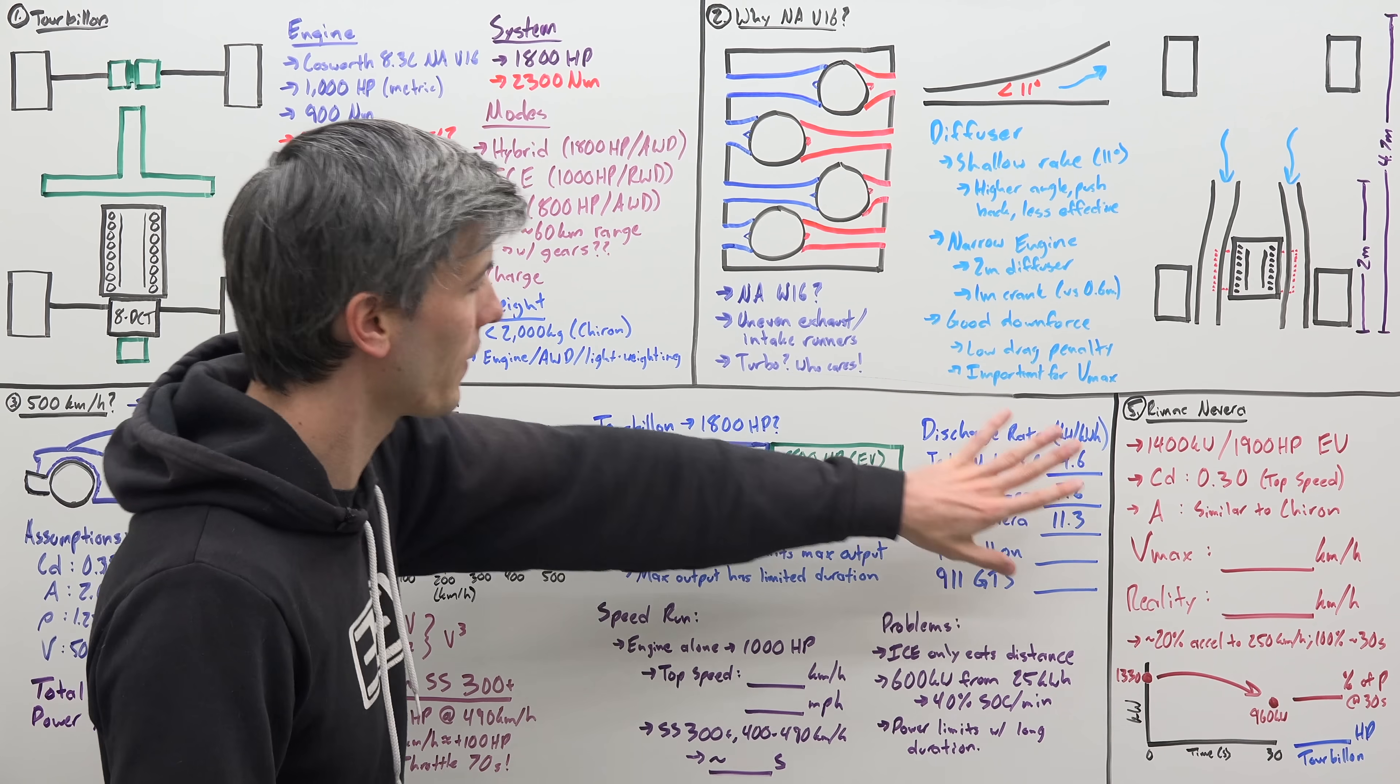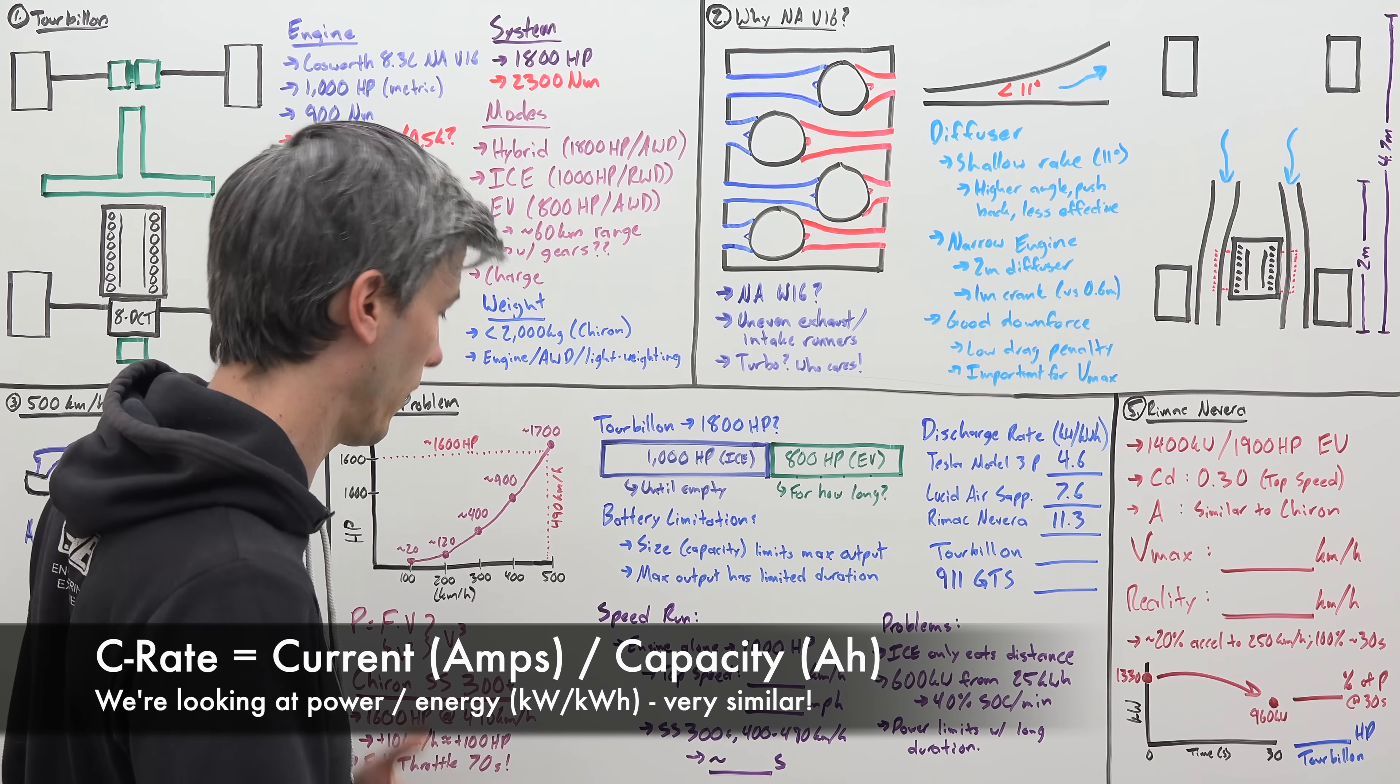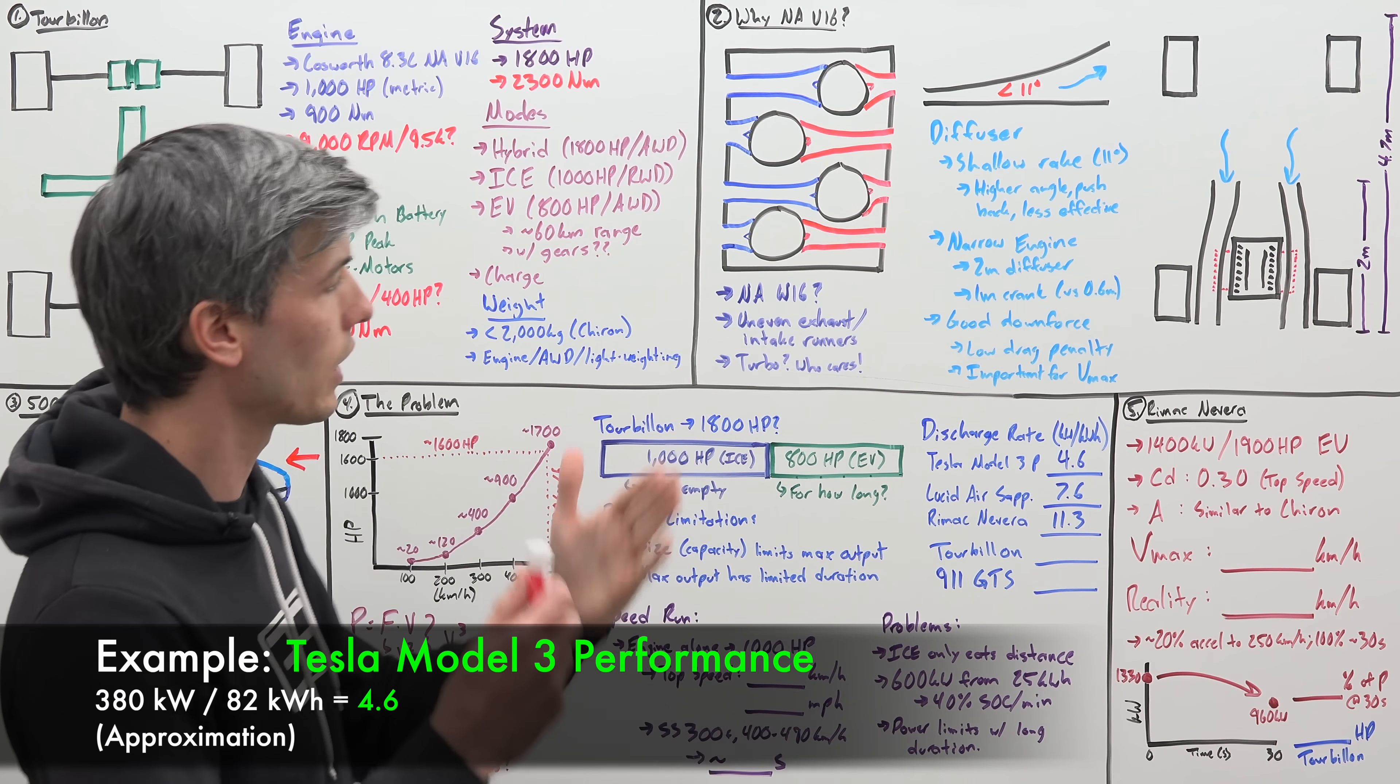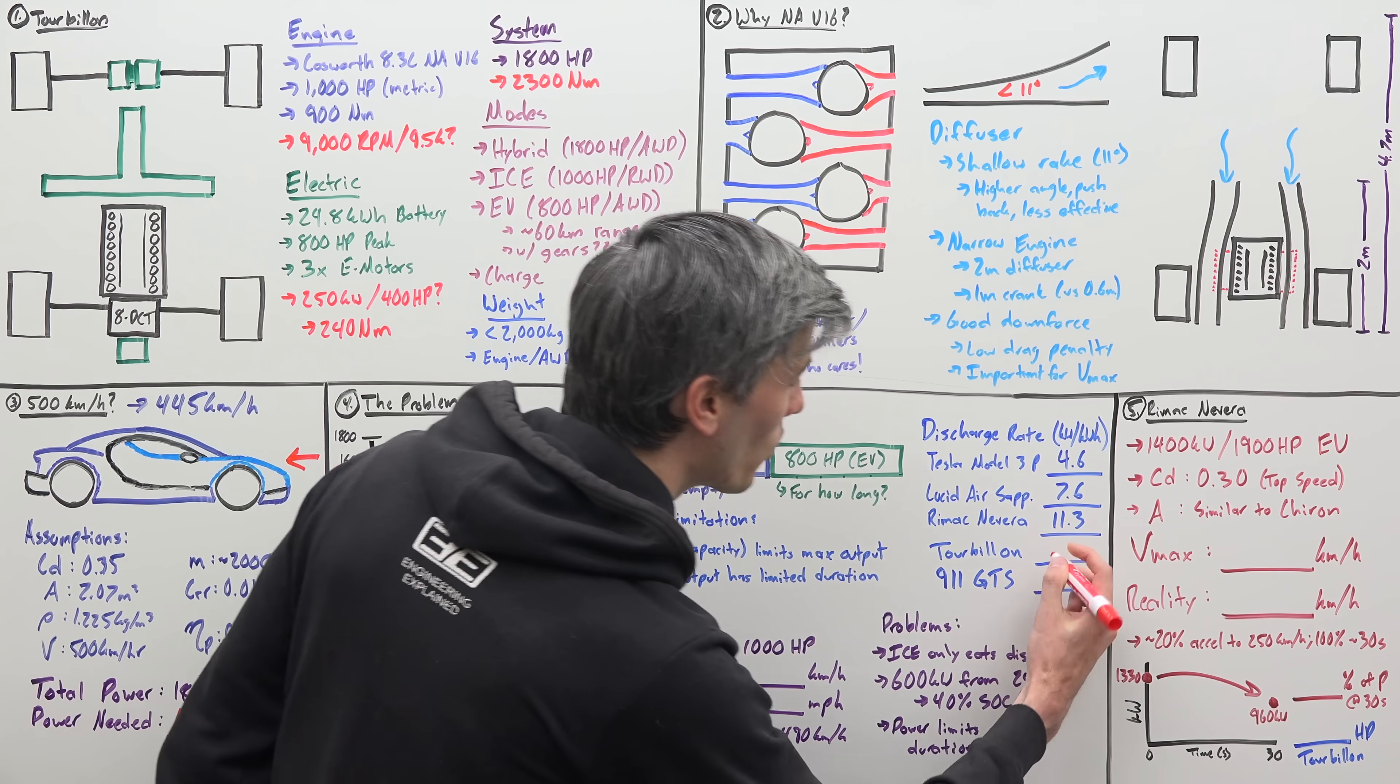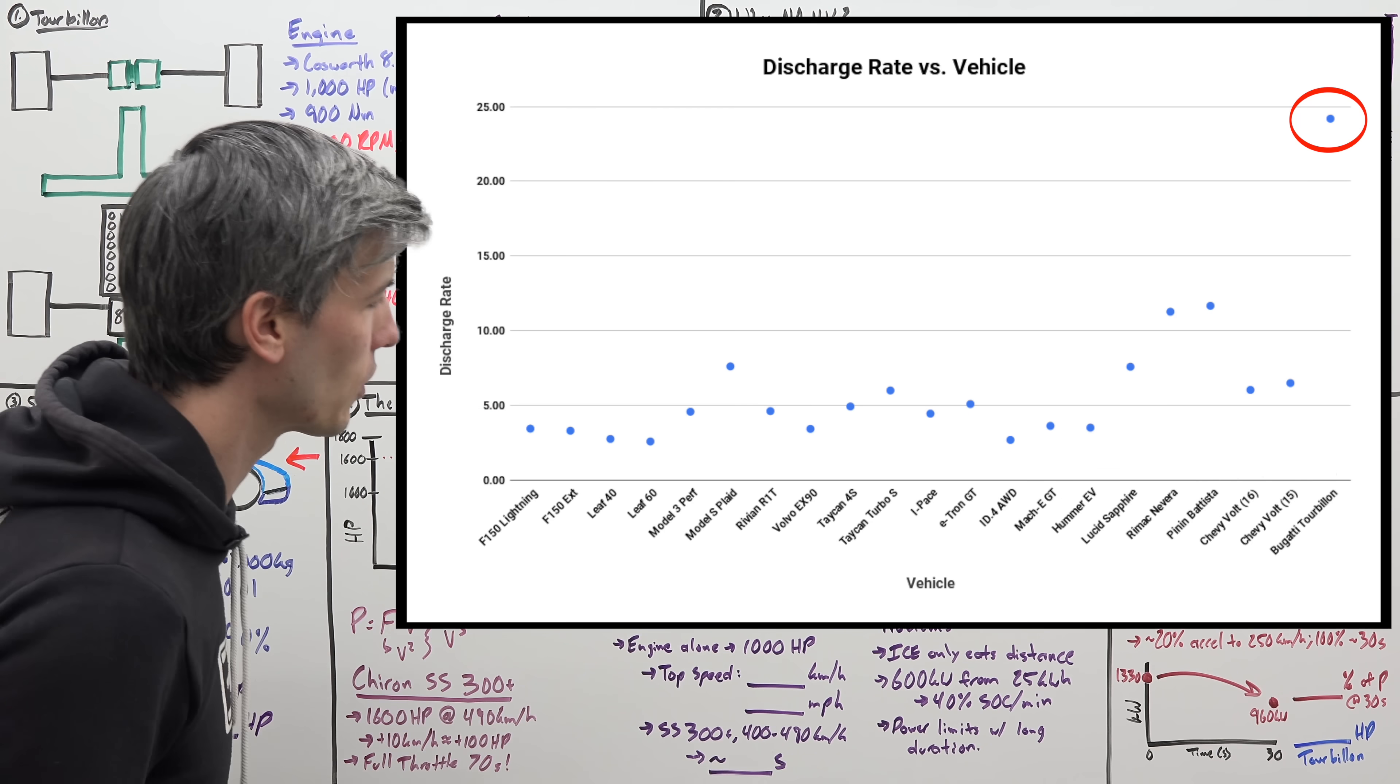So here I'm going to show you some of the discharge rates of different vehicles out there. We're looking at kilowatts delivered by the powertrain divided by the amount of kilowatt hours that that battery pack has, the discharge rate. So for a Tesla Model 3 performance, you're delivering about 4.6 times as many kilowatts as you have kilowatt hours in that battery pack. Lucid Air Sapphire, 7.6. Rimac Nivera, 11.3. Bugatti Tourbillon, 24.2. This is a very high number. If you plot it against the other vehicles out there, it's this weird super high outlier. Crazy to look at.